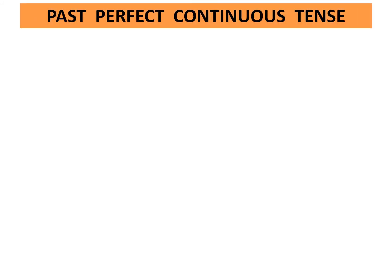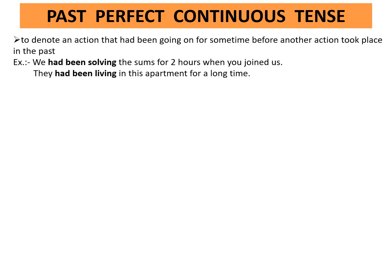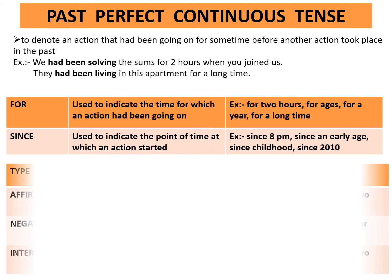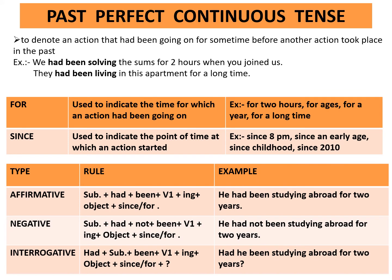Past perfect continuous tense denotes an action that had been going on for some time before another action took place in the past. Example: We had been solving the sums for two hours when you joined us. They had been living in this apartment for a long time. 'For' and 'since' are used in these sentences. Affirmative rule: subject plus had plus been plus first form of the verb plus ing plus object plus since or for. Example: He had been studying abroad for two years. Negative rule: subject plus had plus not plus been plus first form of the verb plus ing plus object plus since or for. Example: He had not been studying abroad for two years.